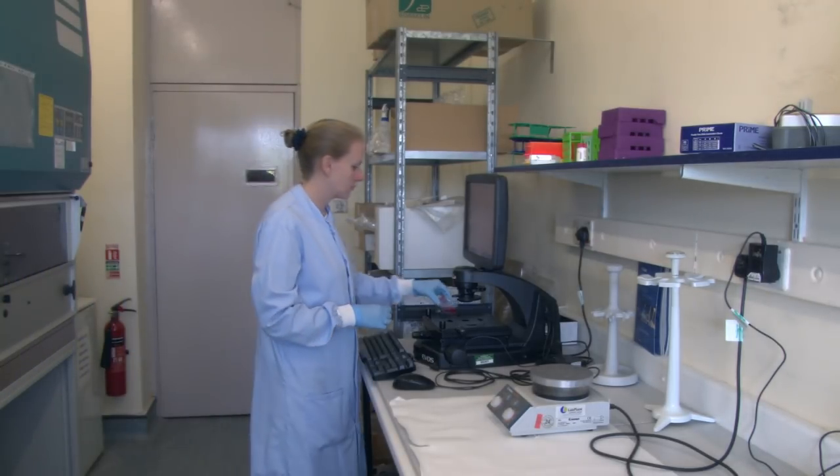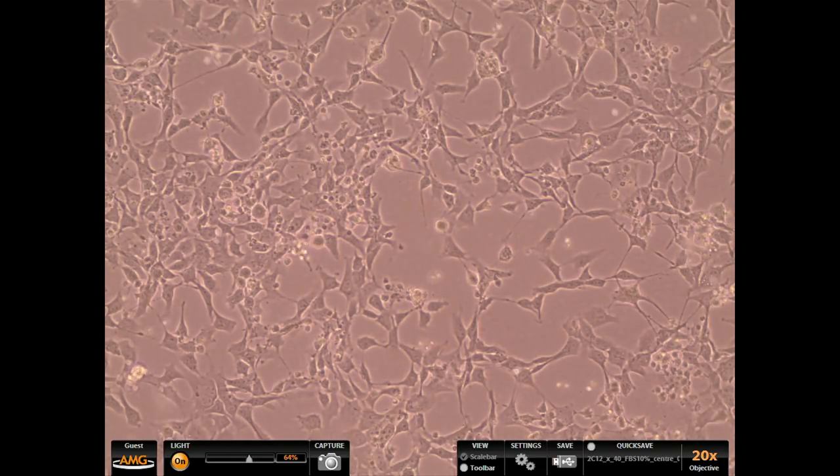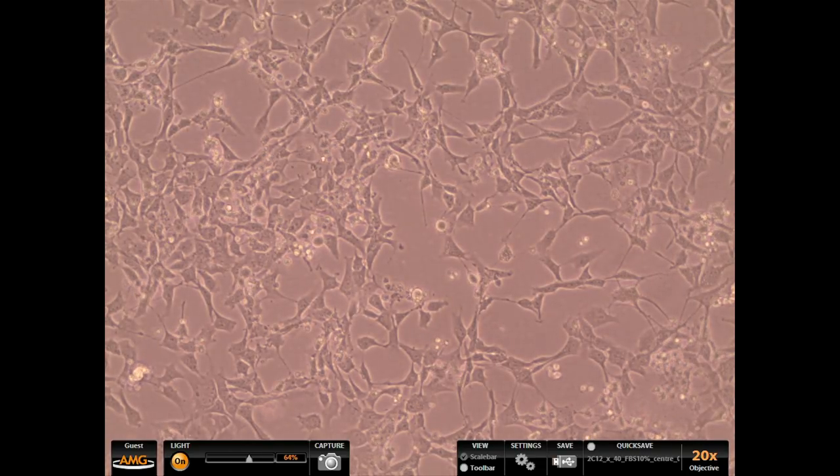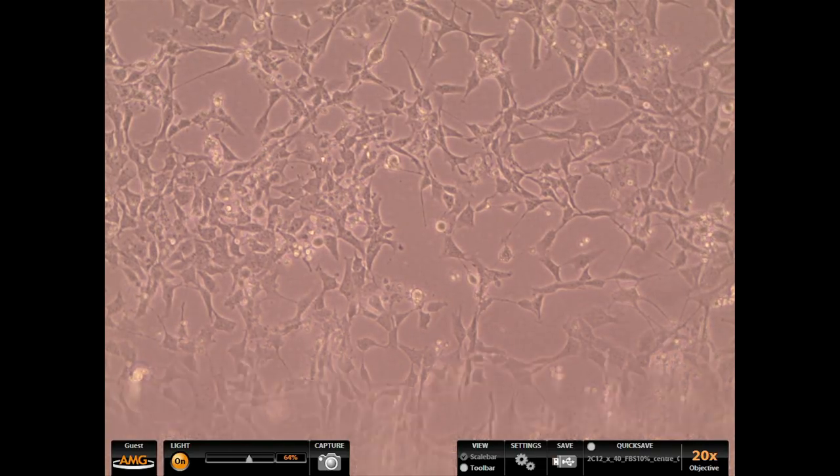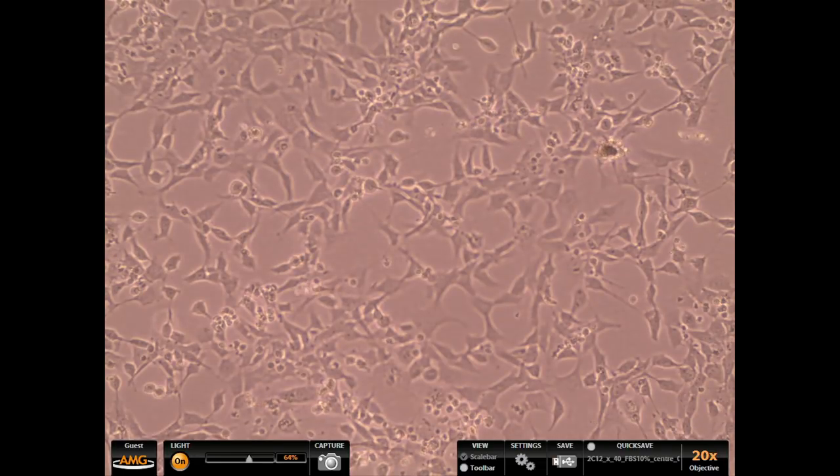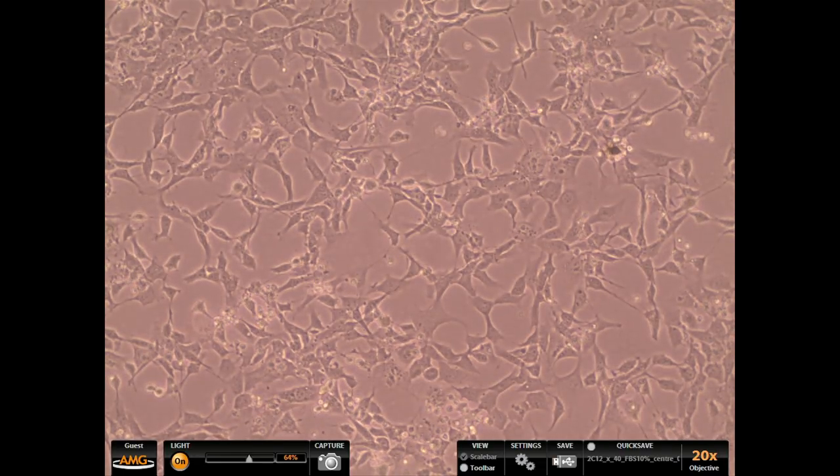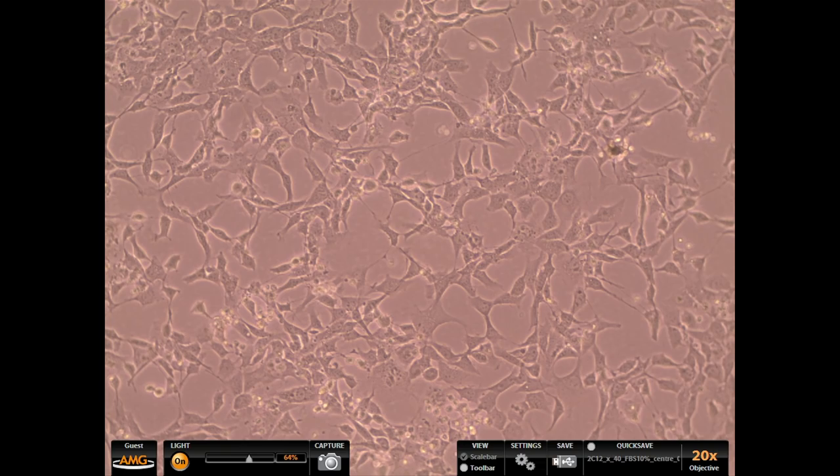Put the flask onto the microscope platform. Look carefully at the culture. Check that there are enough cells. Approximately 80% of the flask surface should be covered. Also check that the cells are well grown and that nothing is contaminating them.